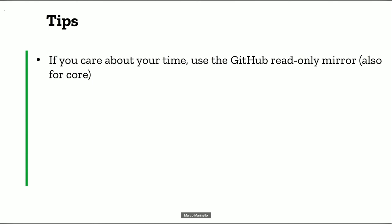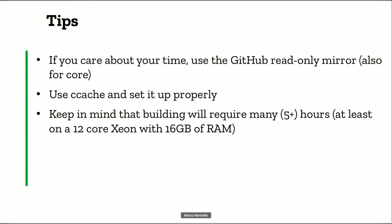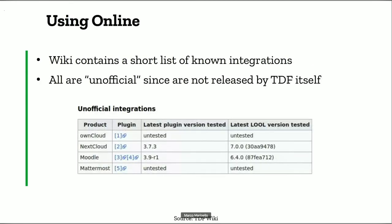Speaking of Git: if you care about your time, use the GitHub mirror, because cloning from git.libreoffice.org for almost 4 or 5 gigabytes of the core repository will take literally forever. From GitHub you can get a satisfying download speed. For both Online and core, use ccache — if you don't want to compile from zero every time, set it up properly with an appropriate cache size of 5 or 10 gigabytes. Keep in mind that building will require many hours — in my experience more than 5 hours on a 12-core Xeon with 16 gigabytes of RAM.